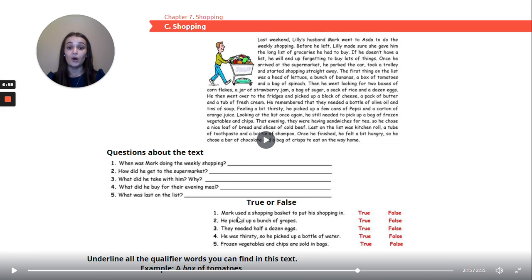Now let's have a look at the true or false questions. Question one. Mark used a shopping basket to put his shopping in. Two. He picked up a bunch of grapes. Three. They needed half a dozen eggs. Four. He was thirsty, so he picked up a bottle of water. Five. Frozen vegetables and chips are sold in bags.